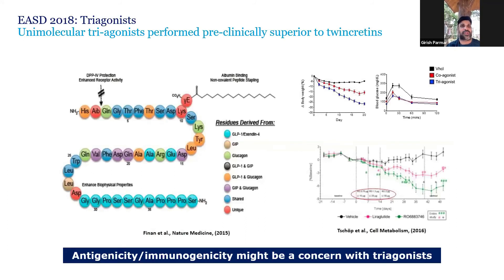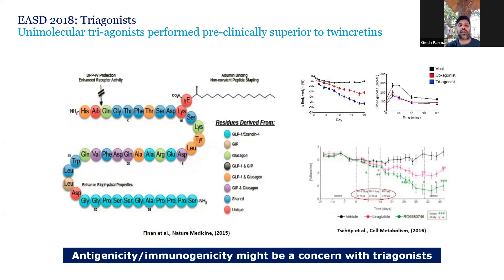Let's talk about triple agonist — that is, simultaneously stimulating the GLP-1 receptor, GIP receptor, and glucagon receptor. There are molecules capable of acting simultaneously on all three receptors and stimulating them, leading to downstream signaling and yielding good metabolic control and good weight loss. These molecules are undergoing phase 1 and phase 2 studies.